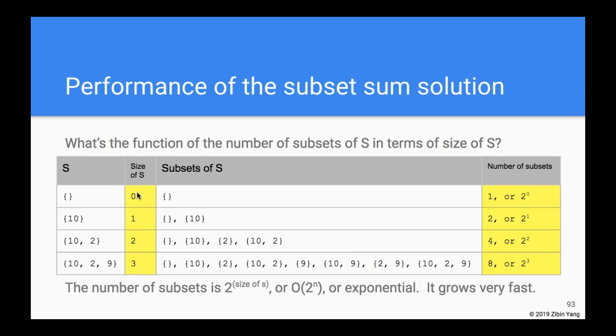And so I kind of plotted out, well as you wrote down the numbers, the size of S is 0, 1, 2, 3, right, and the number of subsets is 1, 2, 4, 8. And if you're trying to find the function that expresses this number in terms of this number, well it's the 2 to the nth power function. Okay, so the number of subsets is then 2 to the size of S, or O(2^n).